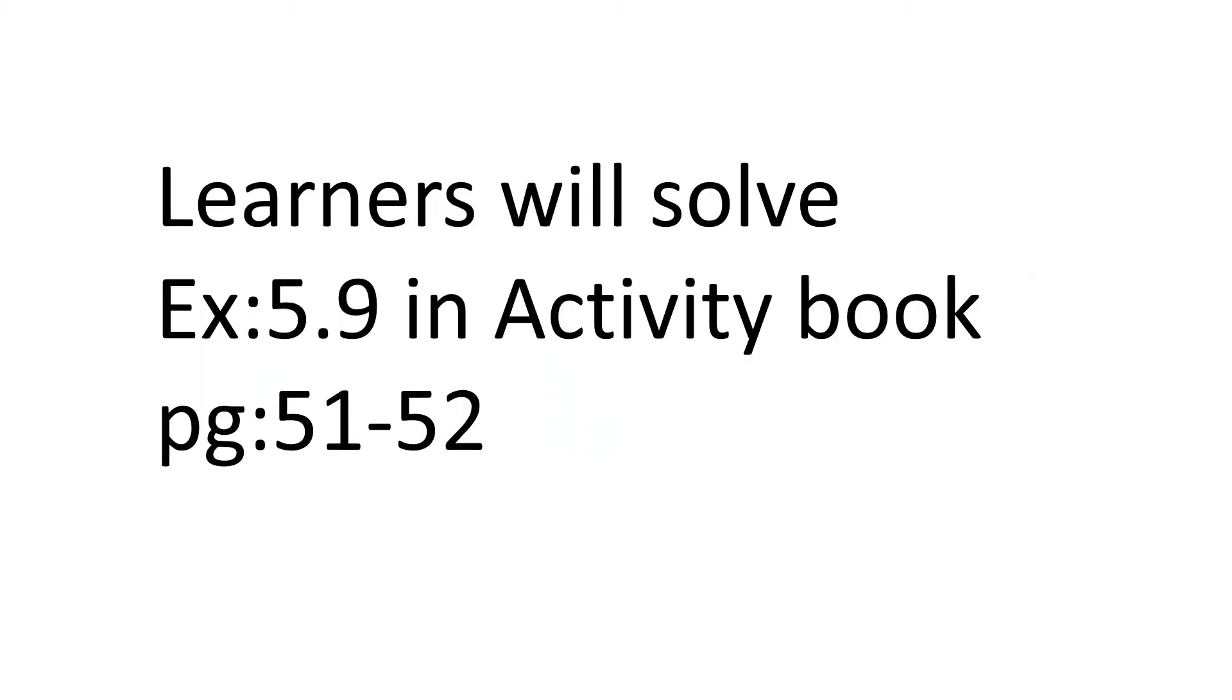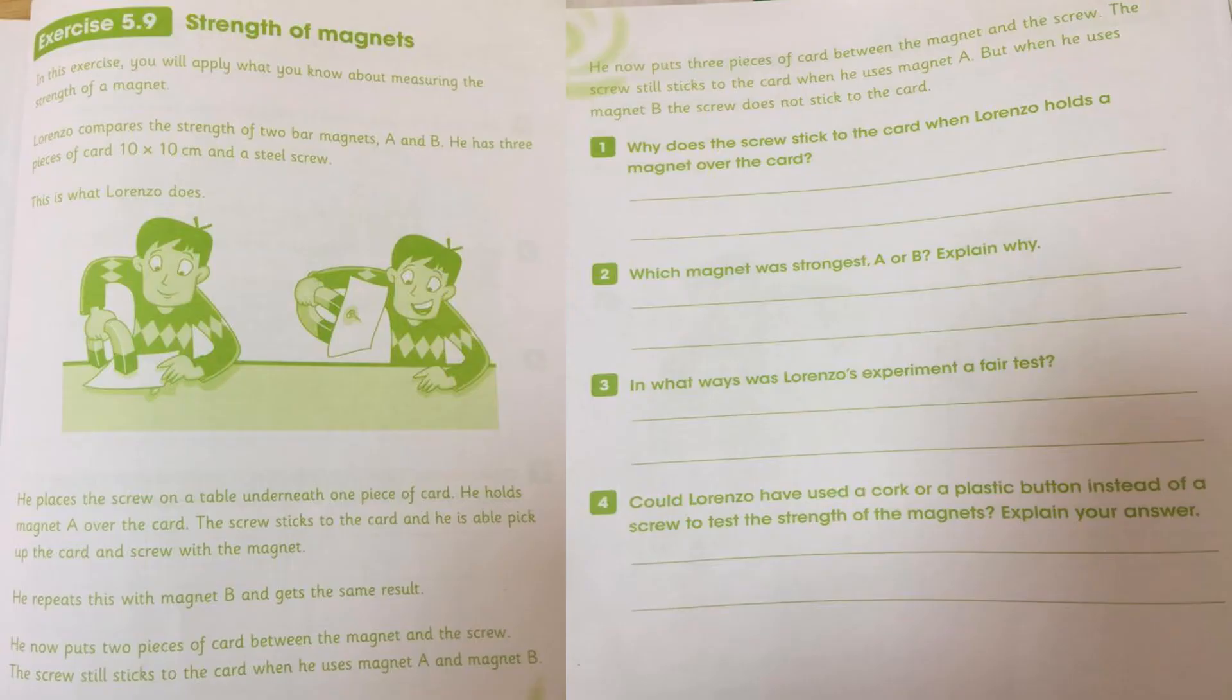Now you need to solve the learner's book. You have to solve exercise five point nine in activity book page number 51 till 52. And here is your book in which he said that the person, that boy, he is using two magnets, A and B magnet. Both have the same pin screw, which attract by the magnet.